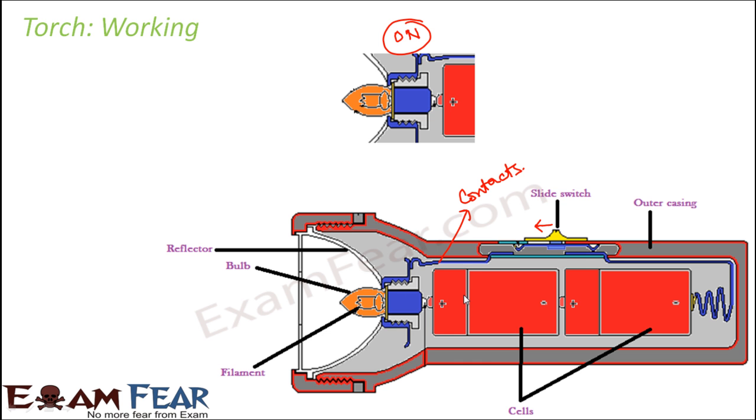In this situation, current flows through the circuit. The filament gets heated, it produces light, and the reflector redirects the light rays to allow a steady beam to fall on other objects. That is the light which we see from the torch.